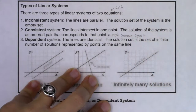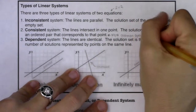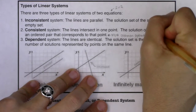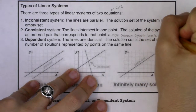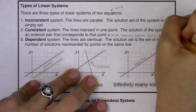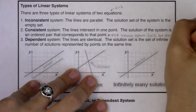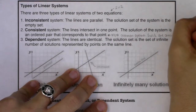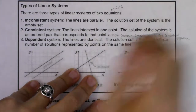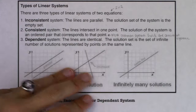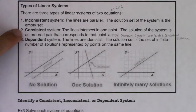We saw this in example one and two, so example one and two are consistent systems. I would say nine out of ten times you do a problem, it's going to be a consistent system.